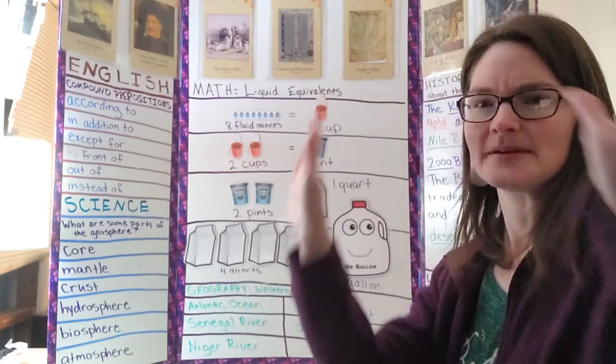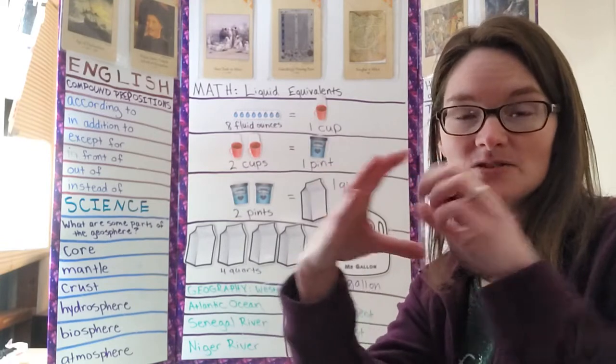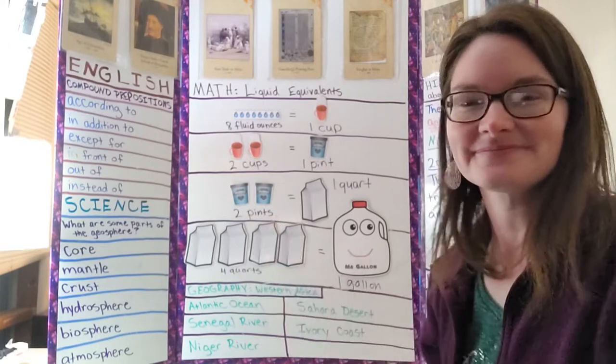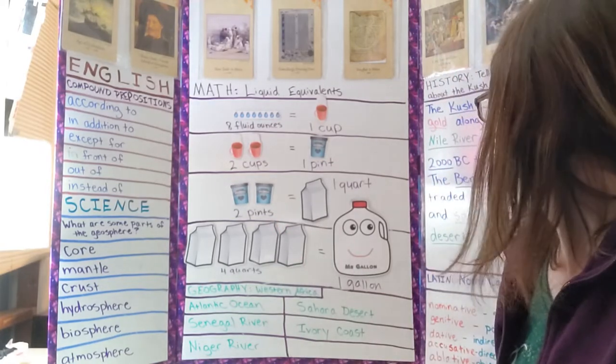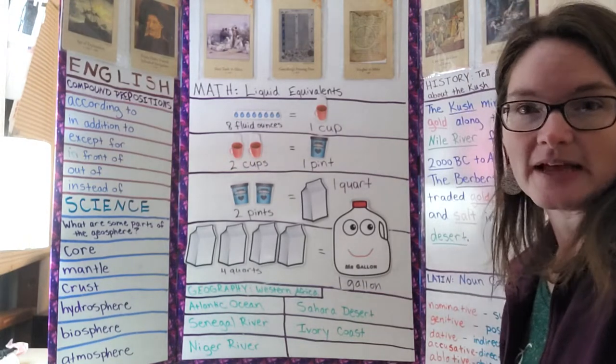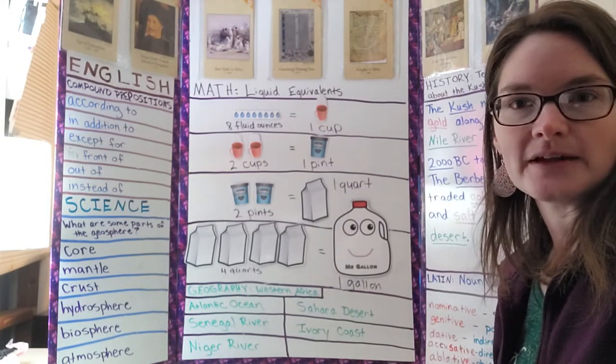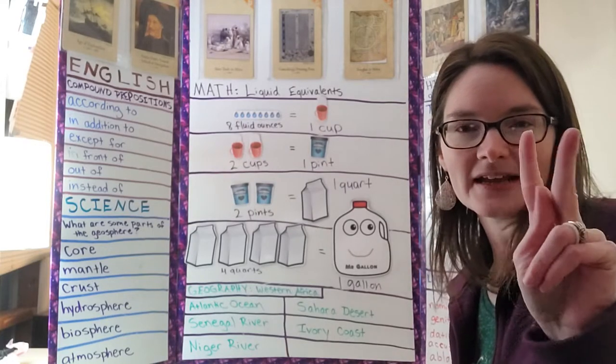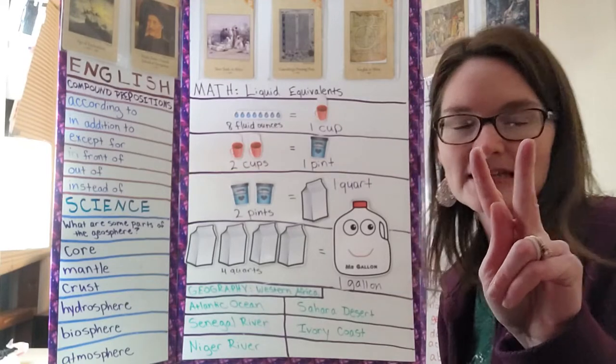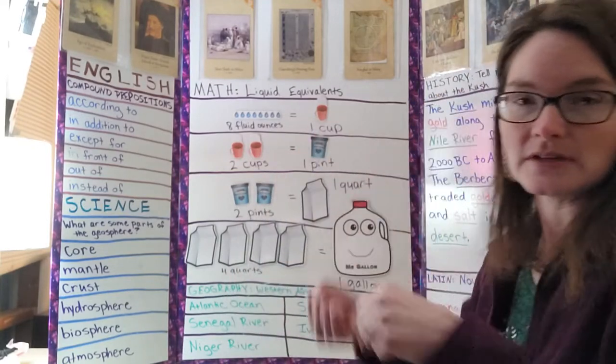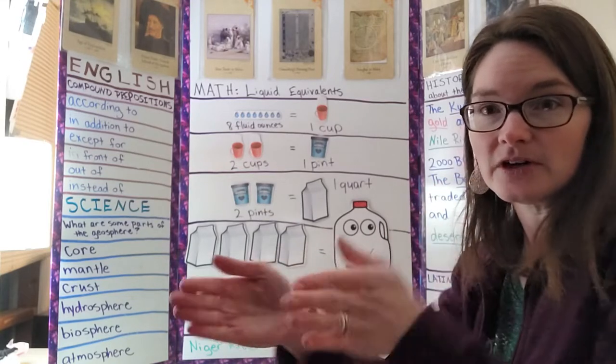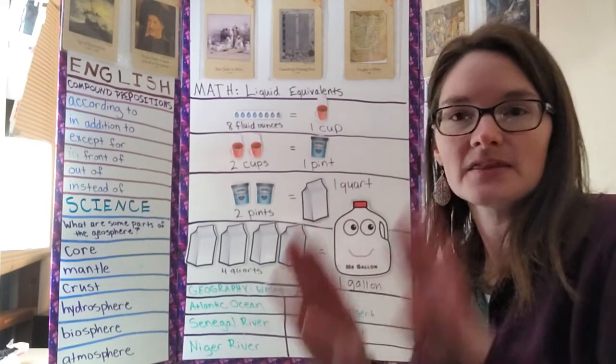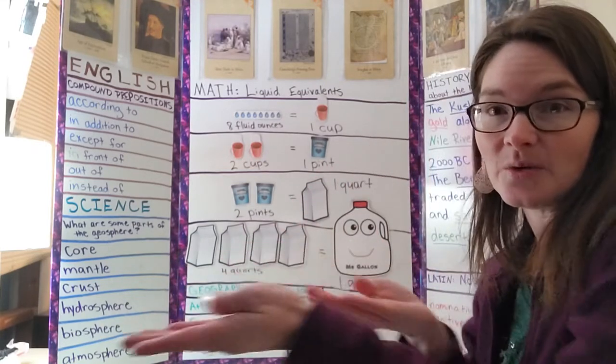For history we also did some hand motions. We listened to the song, I read through it and had them repeat after me, and we did some hand motions. We did the Cush, so make a K - it's just a V with your thumb inside - the Cush mined gold or shoveling along the Nile River from 2000 BC to 350 AD. The Berbers, so make two B's, traded gold, iron, and salt in the desert.